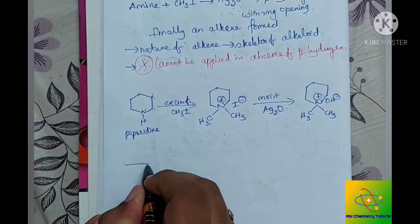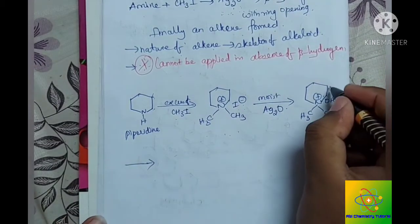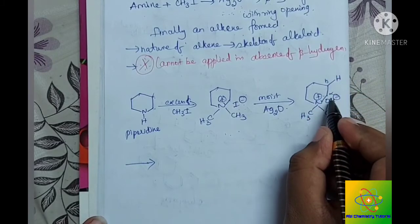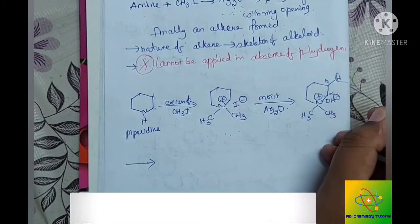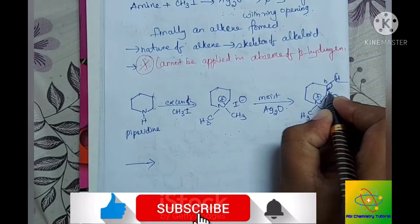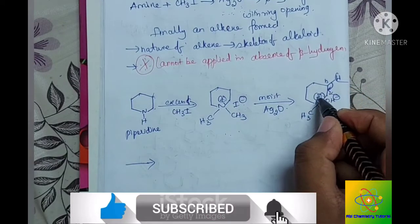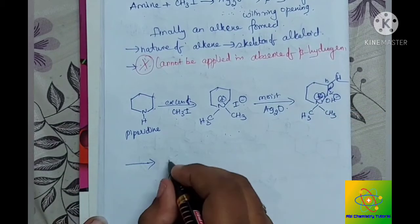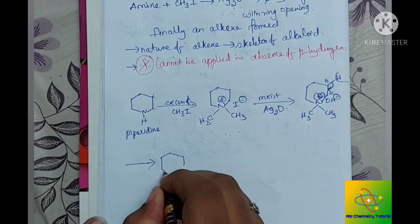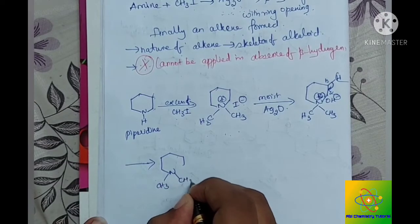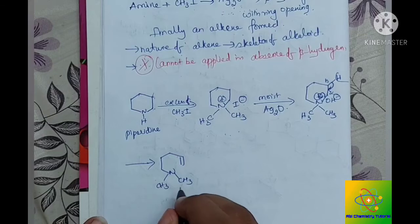The next step will be the elimination of beta hydrogen. Here we have the beta hydrogen, this is alpha and this is beta. This hydrogen will be eliminated and this bond electron shifts here, and this bond leaves its electron to the nitrogen atom, so that we get a quaternary ammonium salt.